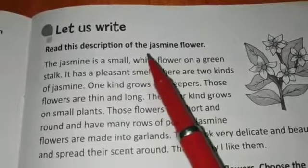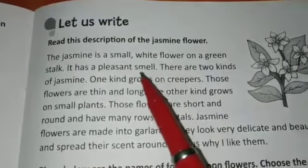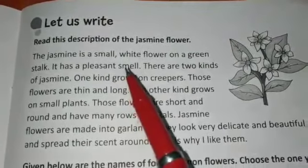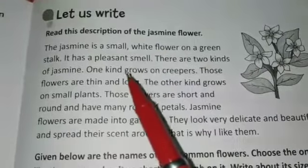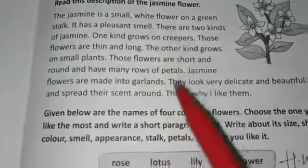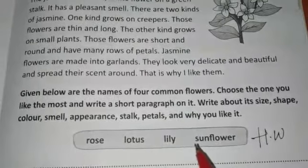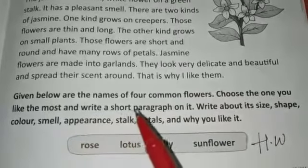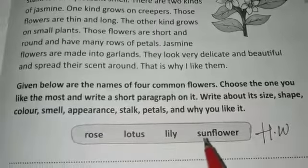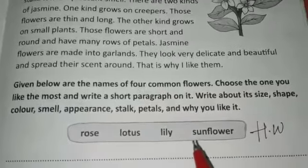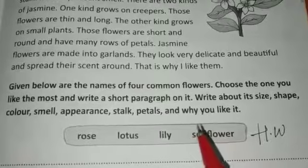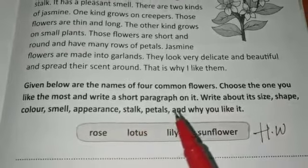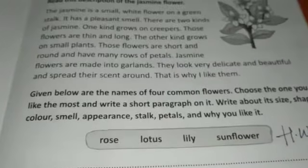Next we move to the writing section. A description of a jasmine flower is given as an example — it's a small white flower which has a pleasant smell. Read this paragraph. Some flowers are shown here — you have to choose the one you like the most and write a short paragraph about it. Write its size, shape, color, smell, appearance, stalk, petals, and also write why you like it. Do this as homework.